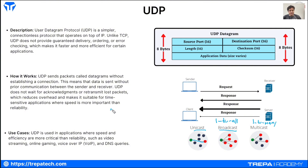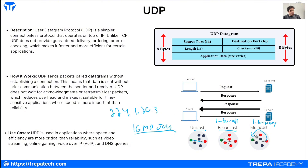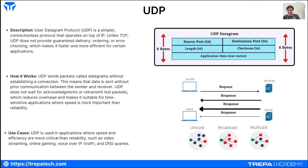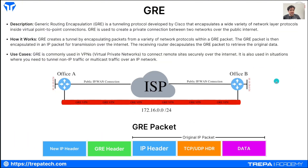Multicast works the same way. If I'm sending a stream to 224.1.20.3 and I don't send an IGMP join message up the reverse path forwarding tree from my client, I'm not going to receive that multicast stream. It's still there — it's still possible — I just won't get it unless I tune into it. That is multicast: one-to-many.